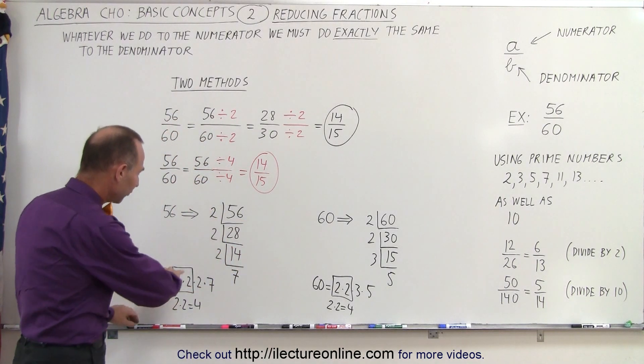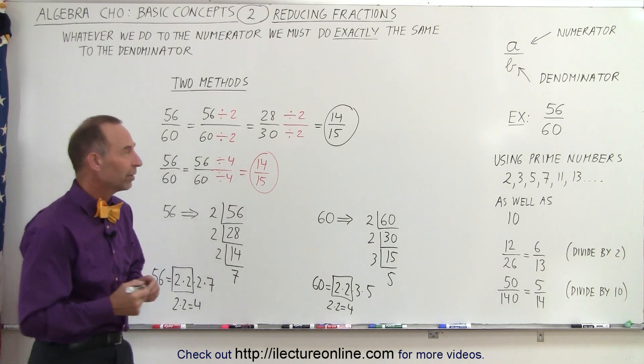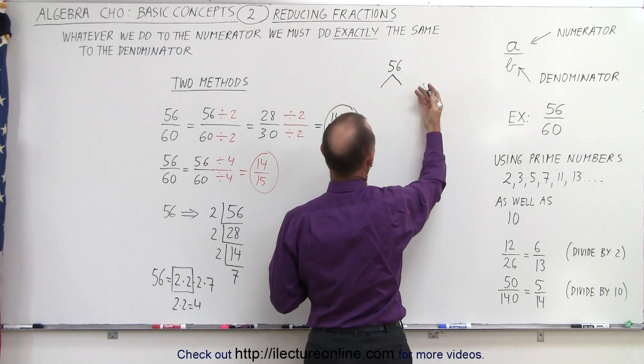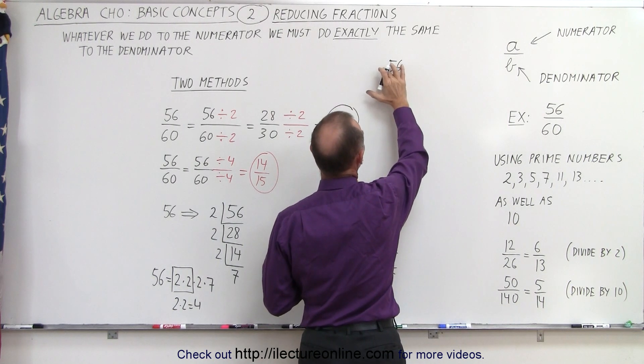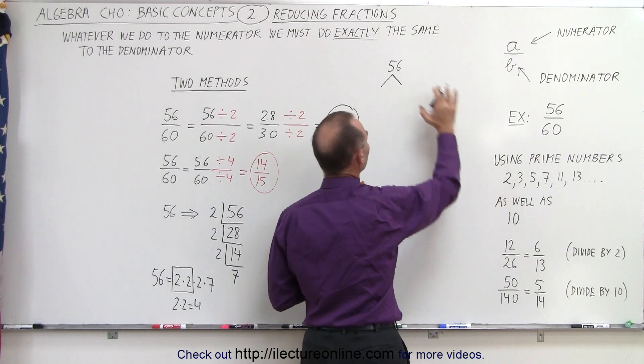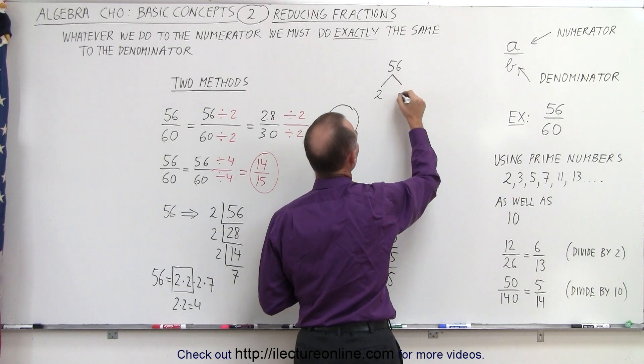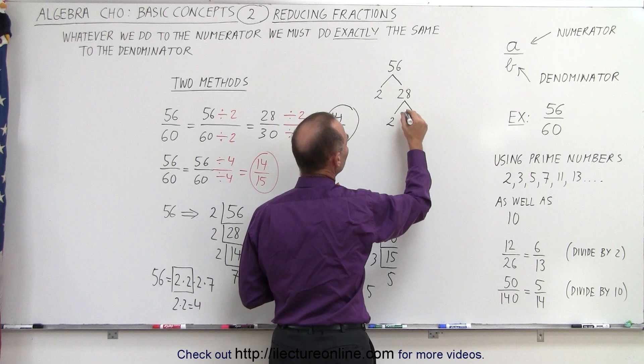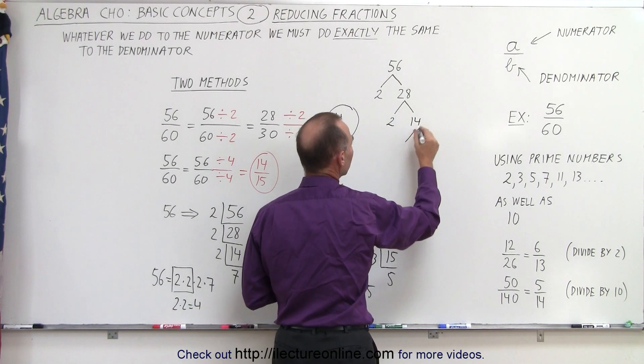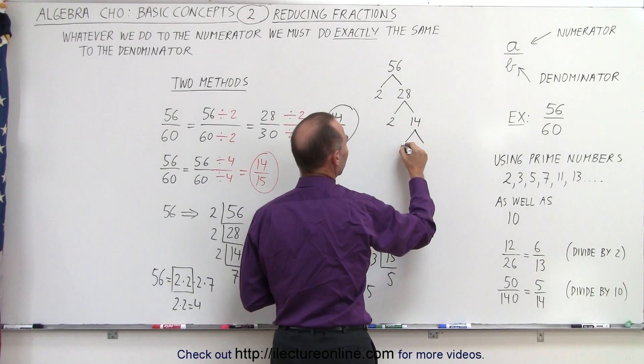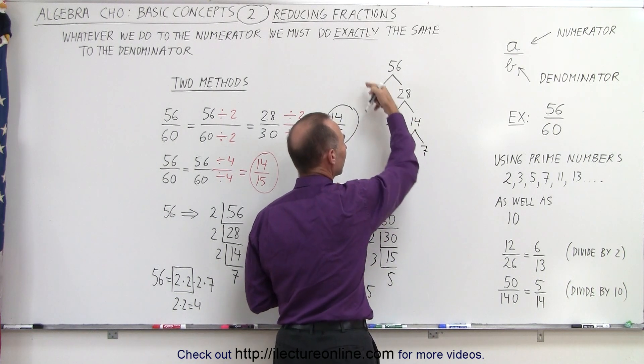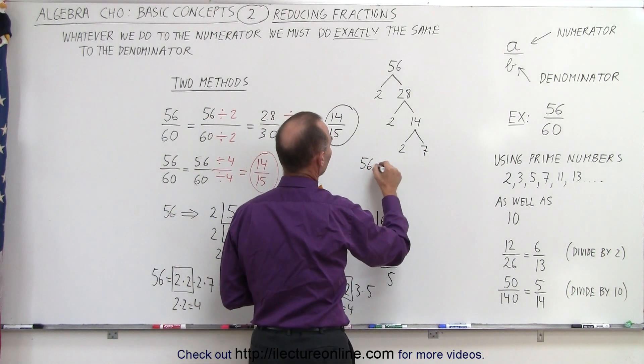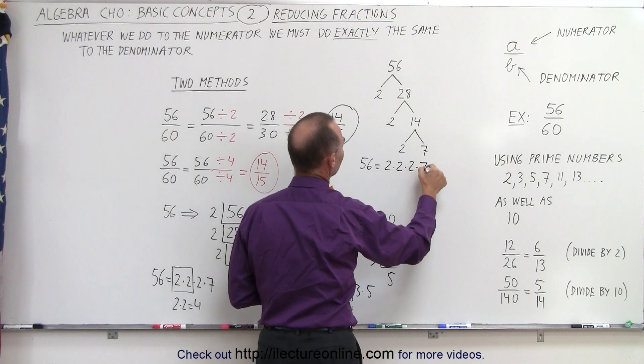Some of us like a different format of this method. It's called the tree root method. For example, we can take the number 56, and we can draw kind of like a root system. We're going to divide 56 by 2 because it's the smallest prime number, and it's an even number. So 56 divided by 2 gives us 28, and we can still simplify that more. It's still even, so divided by 2 we get 14. It's still even, so we can continue to simplify it. 14 divided by 2 is 7. And now we have the simplest set of factors for the number 56. So we can write that 56 is equal to 2 times 2 times 2 times 7.